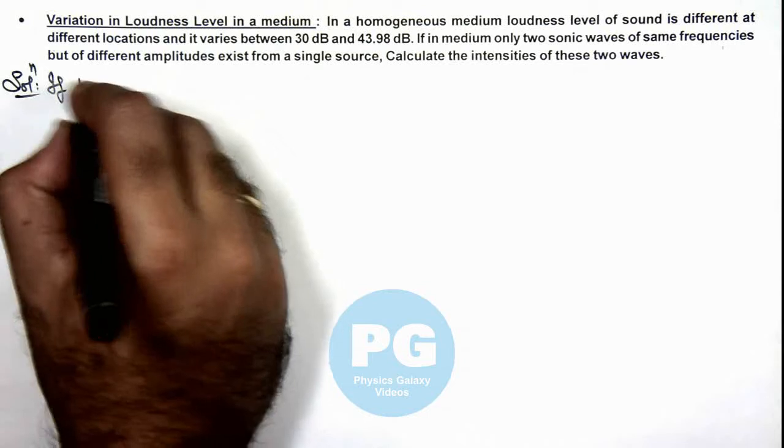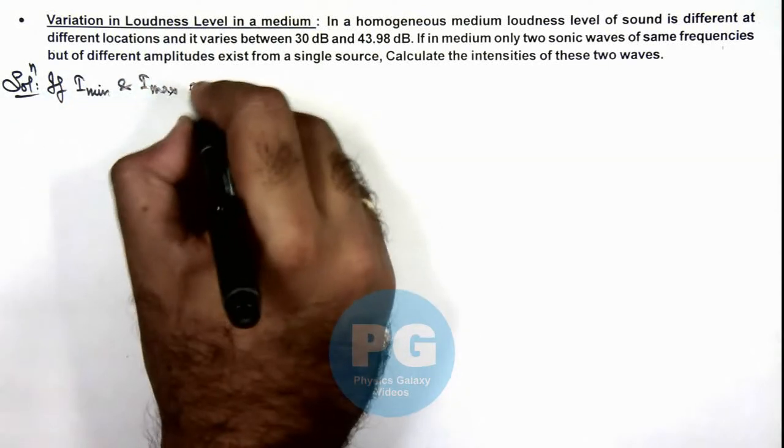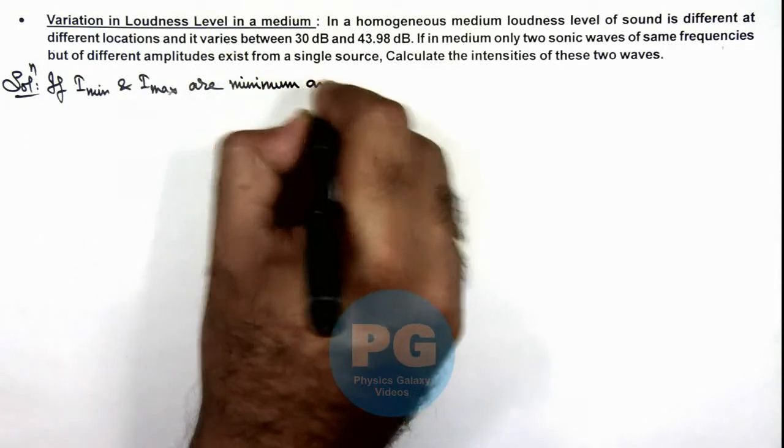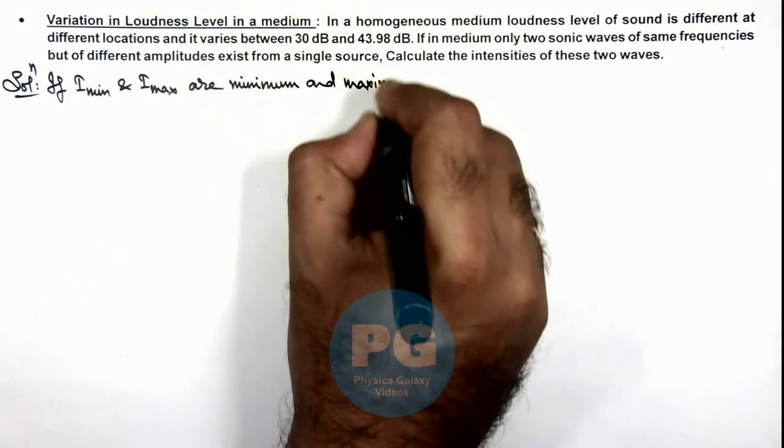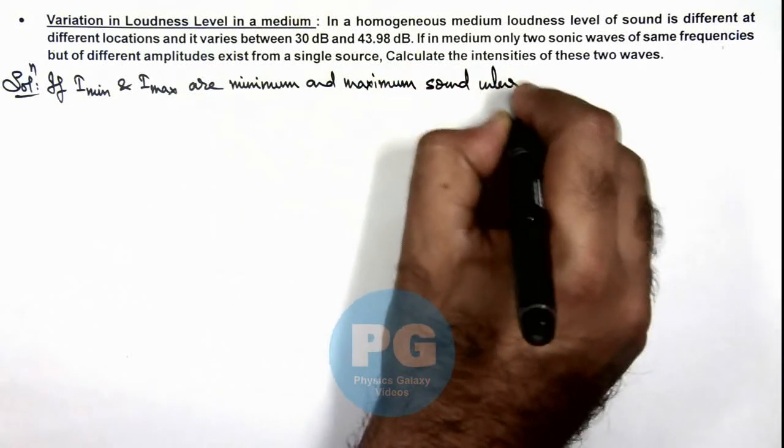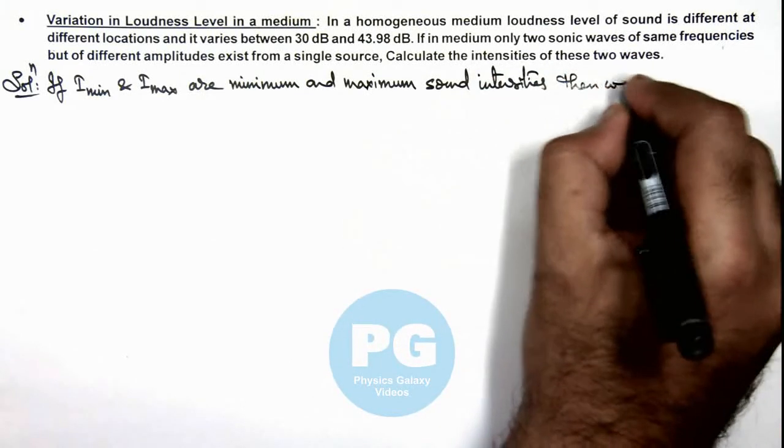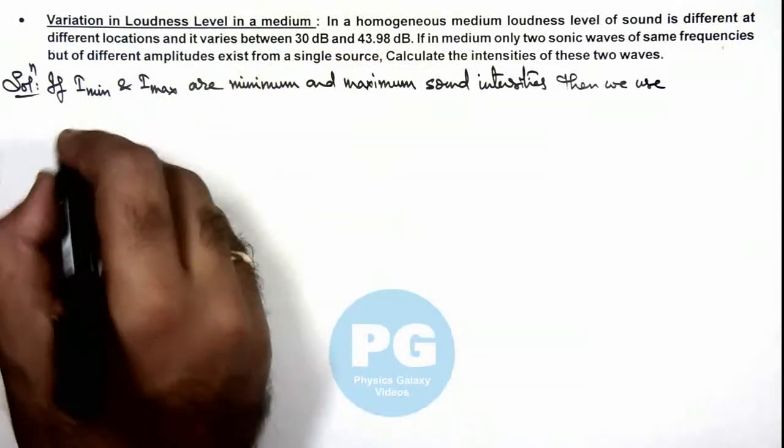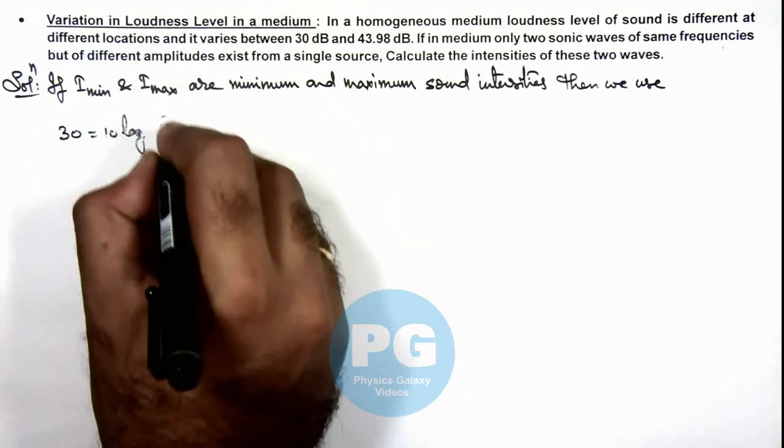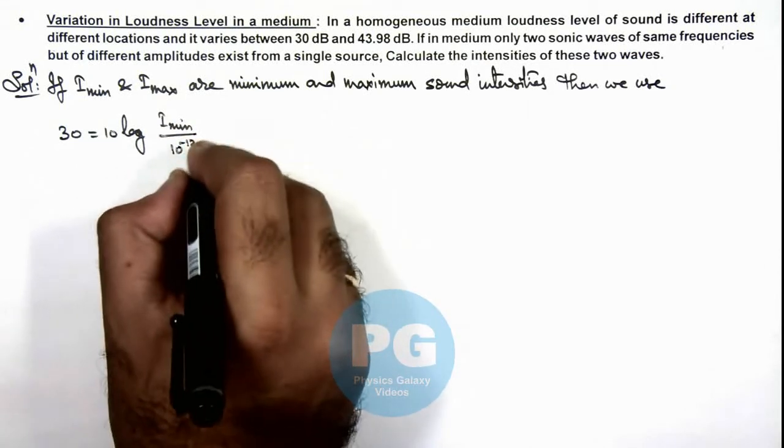If I_min and I_max are minimum and maximum sound intensities, then we can use 30 decibel is equal to 10 log of I_min by I_not which is 10 to power minus 12 watt per meter square.